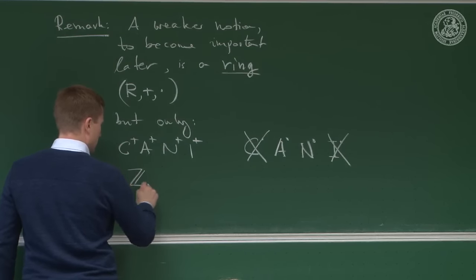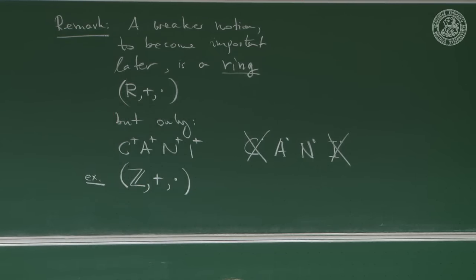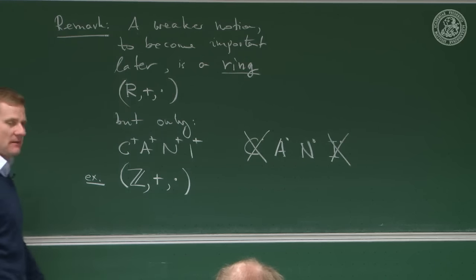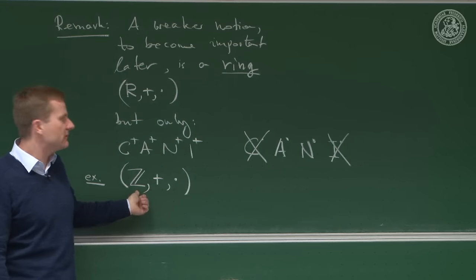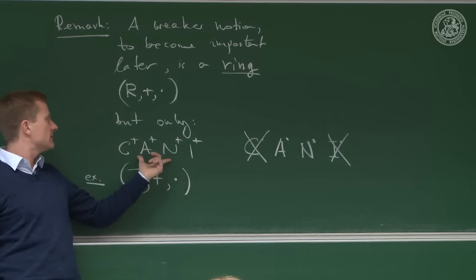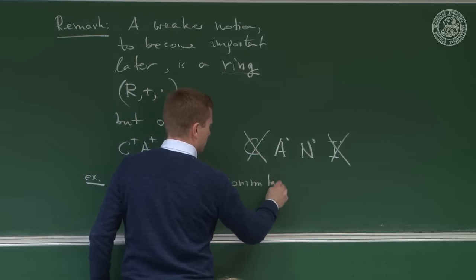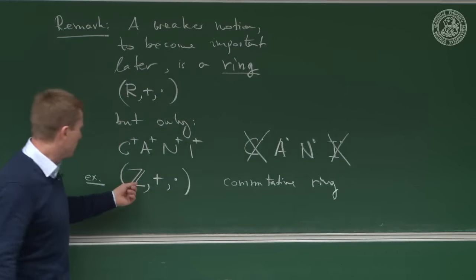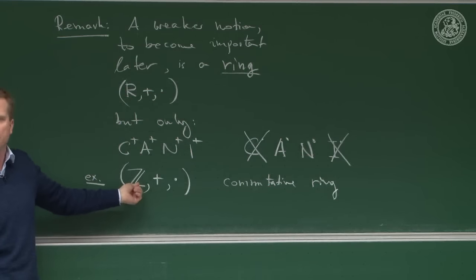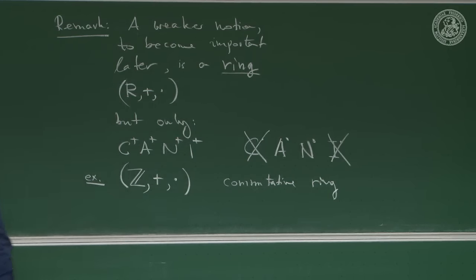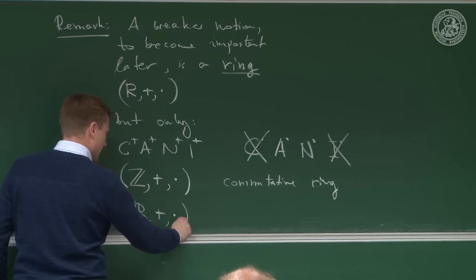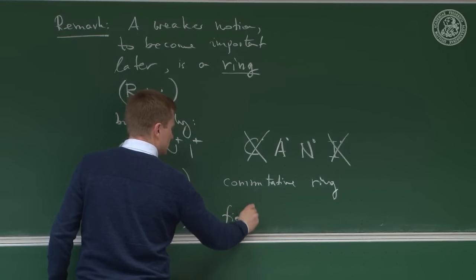Example: first-grade high school mathematics. You already know what negative integers are. You can add them and multiply them. That satisfies CANI. It would be commutative, so that's a commutative ring — a nice ring. But famously, what is the multiplicative inverse of 2? It's one half — and that's not in the integers. So the integers are a ring. You actually, earlier in your life, learned how to calculate with rings before you learned how to calculate with fields.